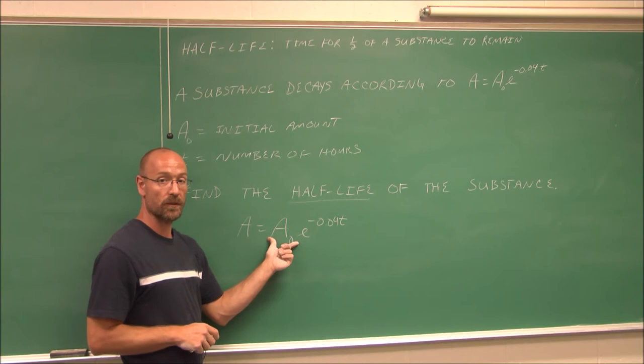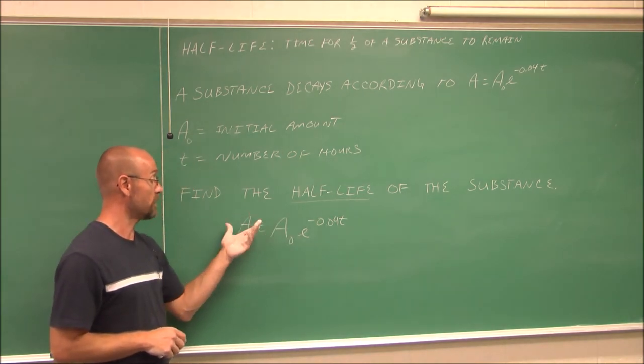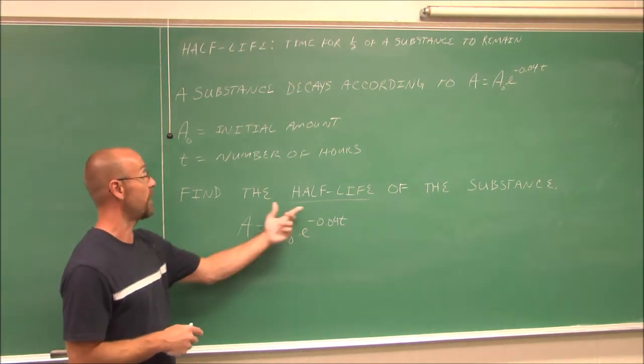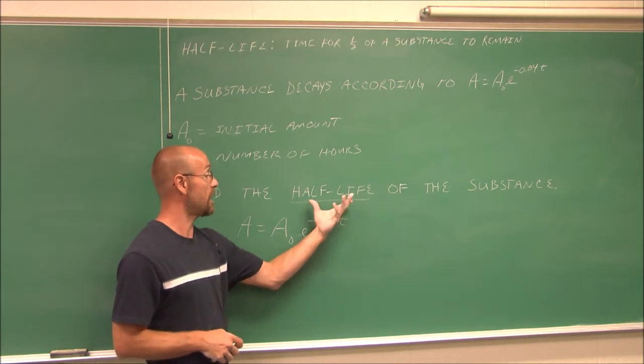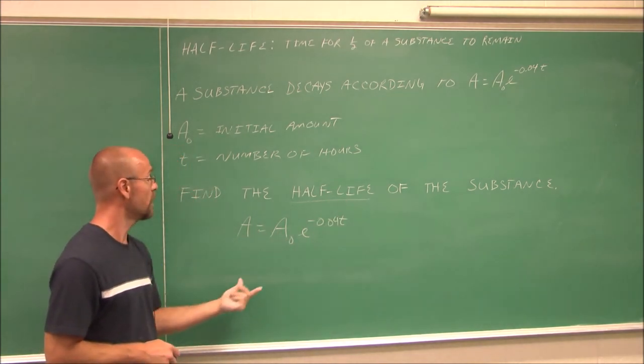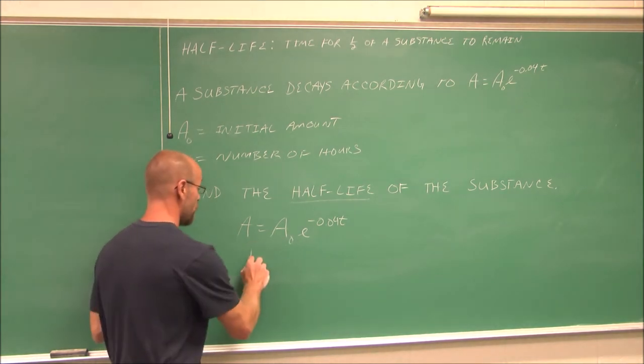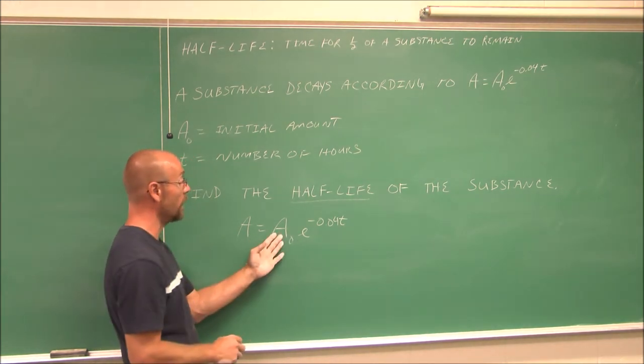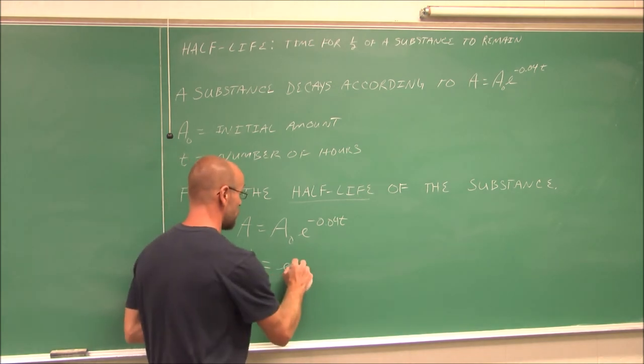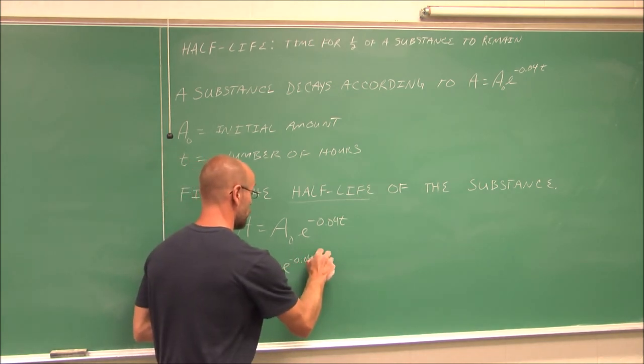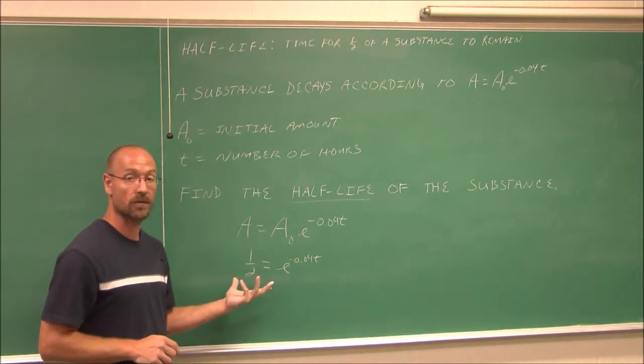Essentially we're saying, how long does it take for half of the substance to remain? If I look at this equation, a equals a0 e to the negative 0.04t, if I start with a certain amount, its value is going to be half. That's what I'm asked to find. Find the half-life, that time that it takes so that half of it remains. So let's say I start with one quantity. This would be 1 half. 1 half equals 1 times this value.